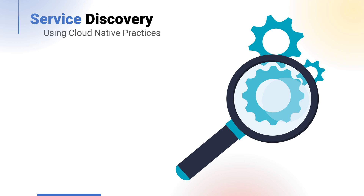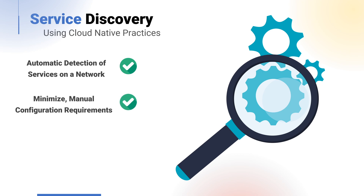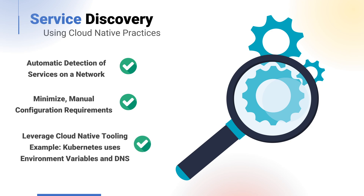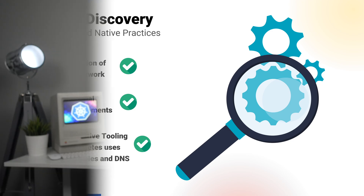Lastly, service discovery. In the past there would often be the use of manual configuration for our various services. With the move to cloud native, service discovery is super important. Ideally, within our solutions we should be able to achieve automatic detection of services — anything manual we really need to avoid. Our apps ideally should be able to find the services they need using simple mechanisms, making use of cloud native tooling for service discovery. For example, Kubernetes is able to make use of environment variables and the built-in DNS service for service discovery. In another video we'll cover in detail the use of DNS with Kubernetes.